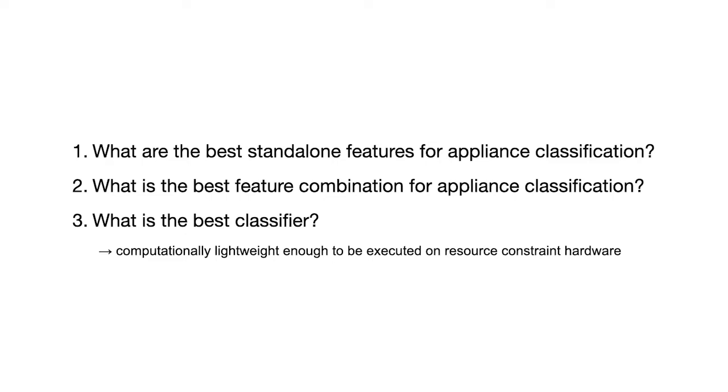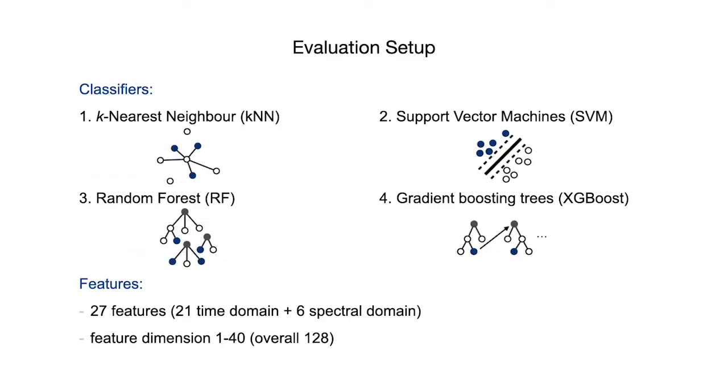So let's start by listing the classifiers and features we actually considered. For the classifiers, these are k-nearest neighbors, support vector machines, random forest, and as they did fairly well in recent machine learning competitions, gradient boosting trees, meaning XGBoost in particular.